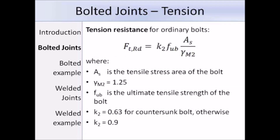The first check is tension resistance. The tensile resistance is equal to K2 times Fub times As over gamma M2. As is the tensile stress area of the bolt, which can be obtained from the blue book. Gamma M2 is 1.25. Fub is the ultimate tensile strength of the bolt, obtained from Table 3.1 in Eurocode 3 Part 1-8. K2 is 0.63 for countersunk bolts; otherwise K2 is equal to 0.9.